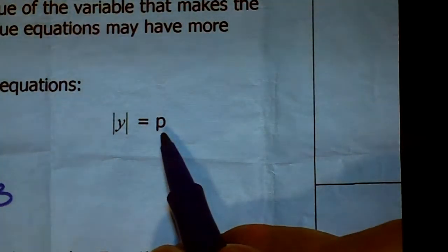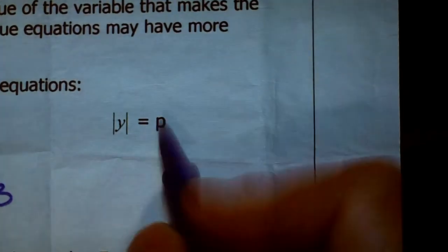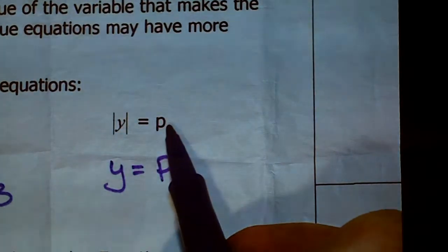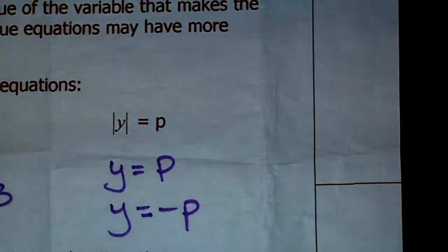The last one, just to mix things up: the absolute value of Y equals P. Y can equal P, because the absolute value of P is P. But the absolute value of negative P is also P, so Y can also be negative P.